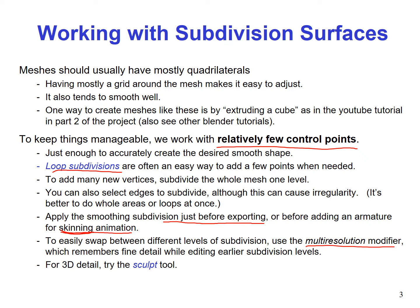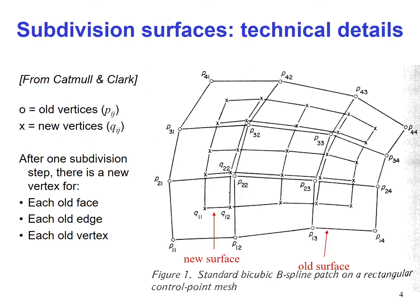For 3D detail you can try the sculpt tool. Now we are talking about Blender here. Now, details of the technique itself — how does the technique work? This is from the original publication of Catmull and Clark, who proposed this method for making 3D models using subdivision surfaces.